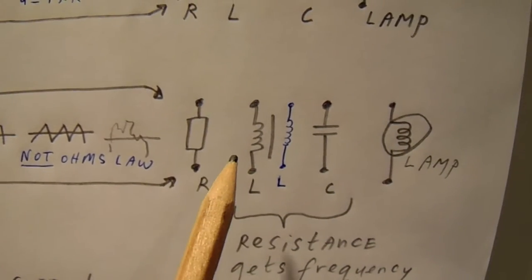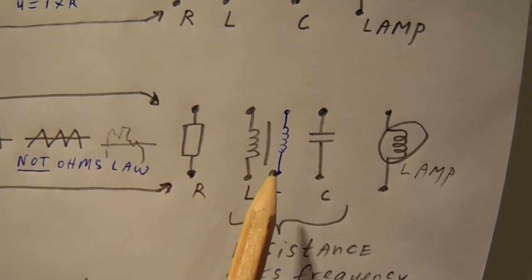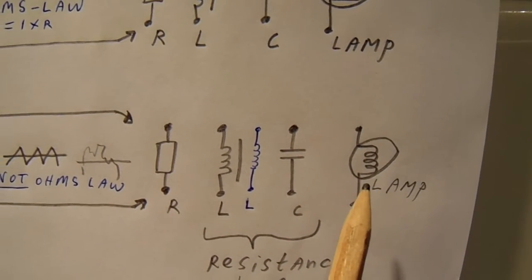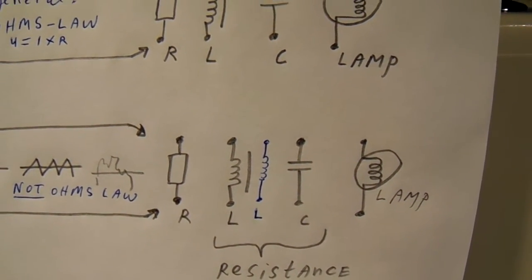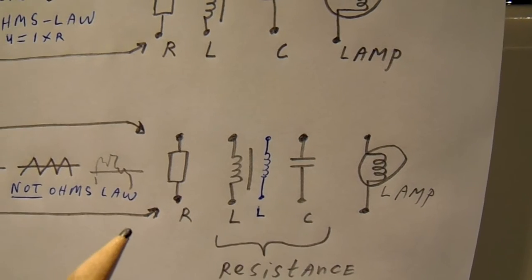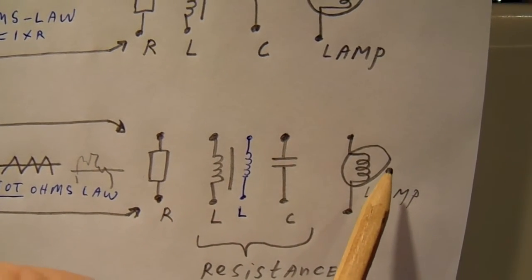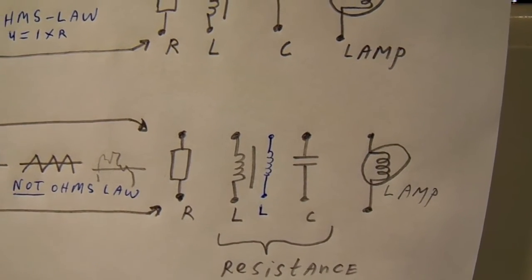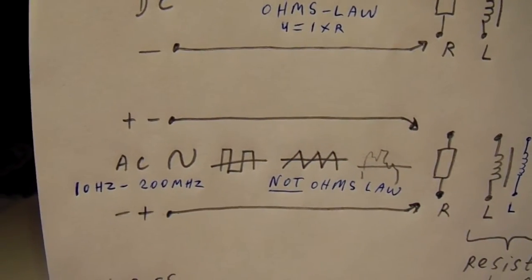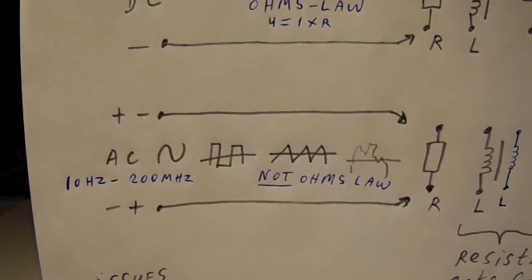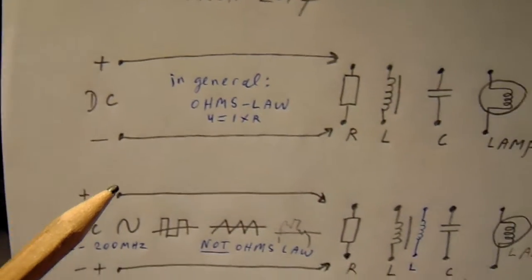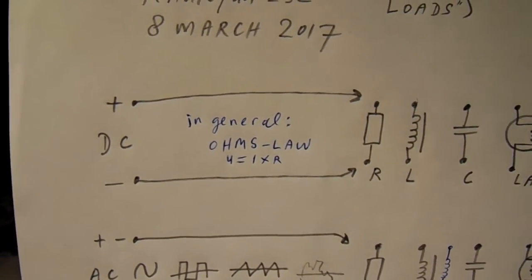The resistor, the coil, the cap and the lamp act different, but I have to tell that the resistor and the lamp also on AC act the same as on DC. Well, I want to explain that later.